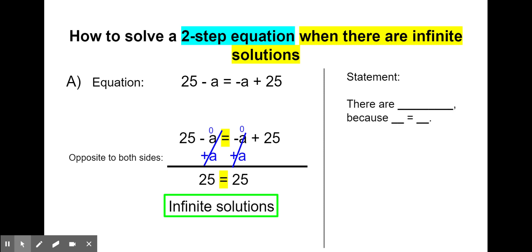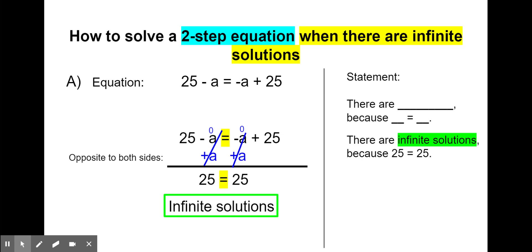For our statement, we're going to write: there are blank because blank equals blank. We're not going to do the check since there are so many possibilities, but you can always check it in your head. We write the statement: there are infinite solutions because 25 equals 25. That's our last step — a number equals the same number.